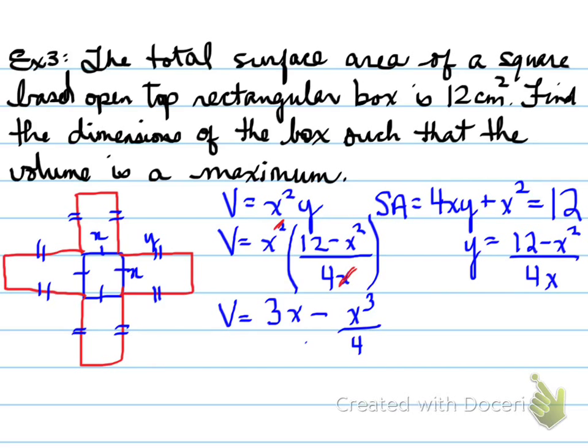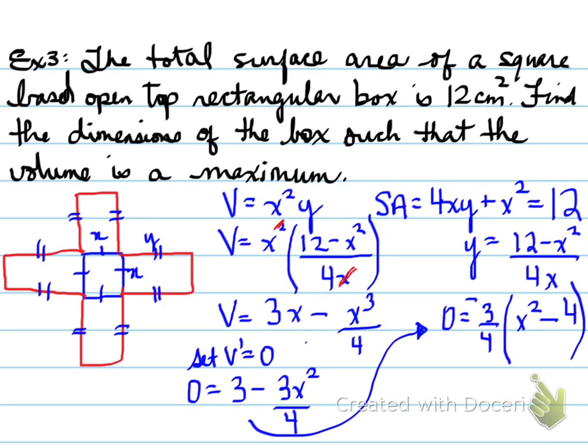Well, what does that give us? Well, now we have the volume simplified to an expression, and we want to maximize this volume. So we set the derivative of this volume equal to 0. What does that give us? Well, 3 minus 3X squared all over 4 is the derivative, and set that equal to 0. When we deal with that, we end up getting a value for X to be X squared is equal to plus or minus 2.